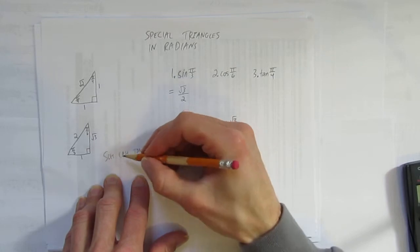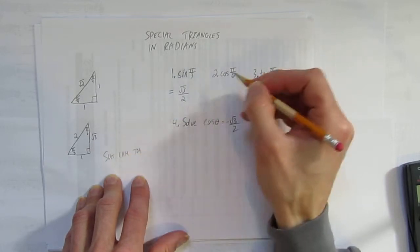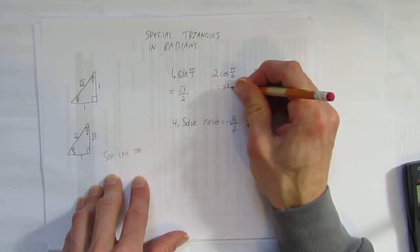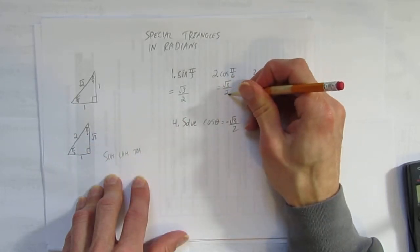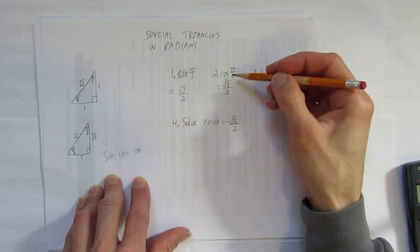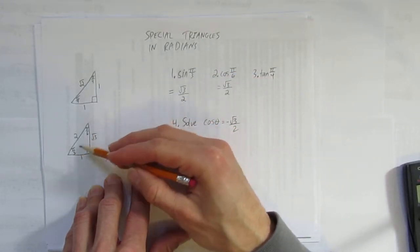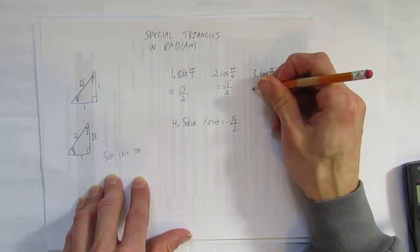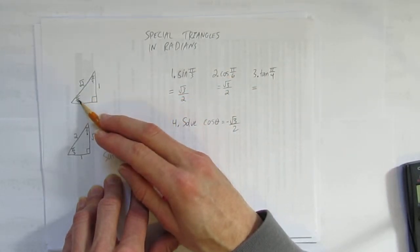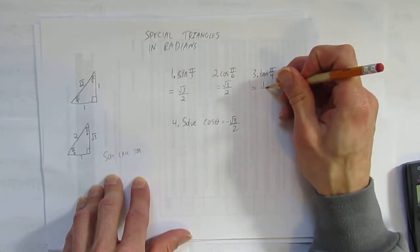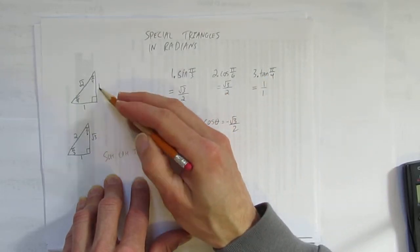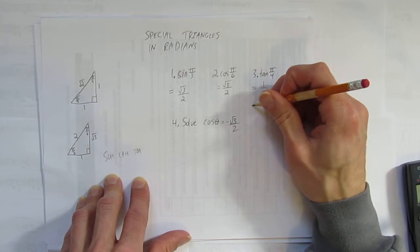Let's try cos of pi over 6. Cosine is adjacent over hypotenuse. Go to pi over 6, take the adjacent — root 3 — and divide by the hypotenuse, 2. You'll notice that sine of pi over 3 gives the same answer as cos of pi over 6, because you're switching trig functions and switching angles. For tan of pi over 4, go to either pi over 4 angle. Opposite is 1, adjacent is 1, so tan of pi over 4 equals 1 over 1, which simplifies to 1.